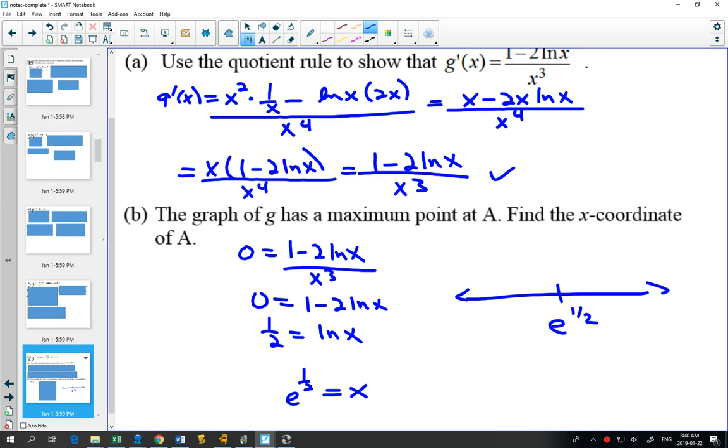What happens when I plug in something less than e to the half? First of all, critical points also include things that are non-permissible. Can you see that if you plugged in anything less than 0, you would be taking the natural log of a negative number? And we're not allowed to take the natural log of a negative number or the natural log of 0. So this graph only starts from 0 on.